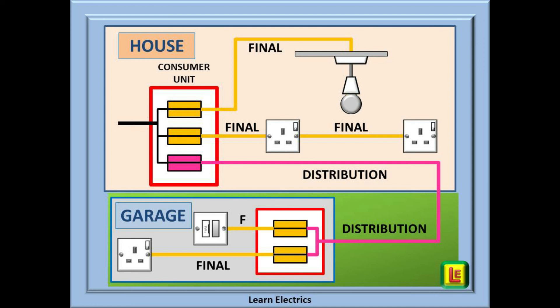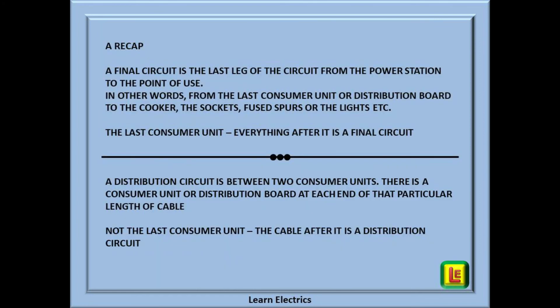Take a moment to look at this drawing — it shows very effectively the difference between final and distribution circuits. A quick recap: a final circuit is the last leg of the circuit from the power station to the point of use — in other words, from the last consumer unit or distribution board to the cooker, sockets, fused spurs, lights, etc. A distribution circuit is between two consumer units; there is a consumer unit or distribution board at each end. If it is not the last consumer unit, the cable after it is a distribution circuit.